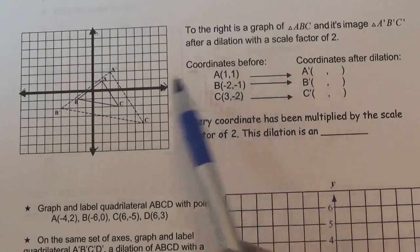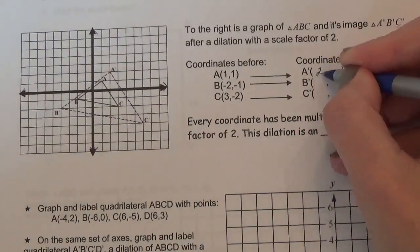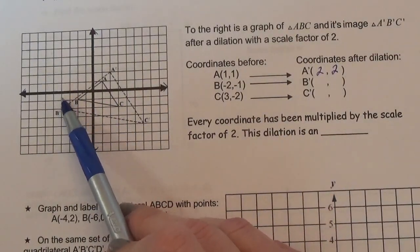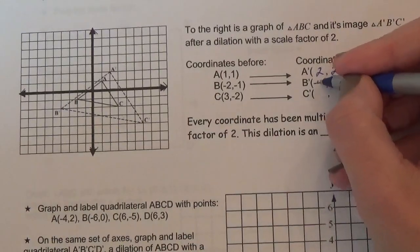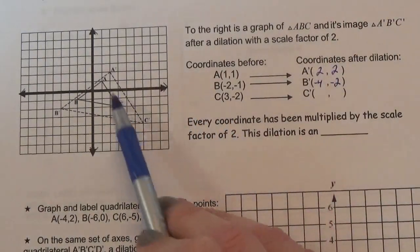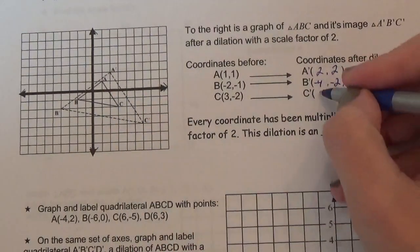So what are the coordinates? A prime is 2, 2. B prime is 4, negative 4. And C prime is 6, negative 4.